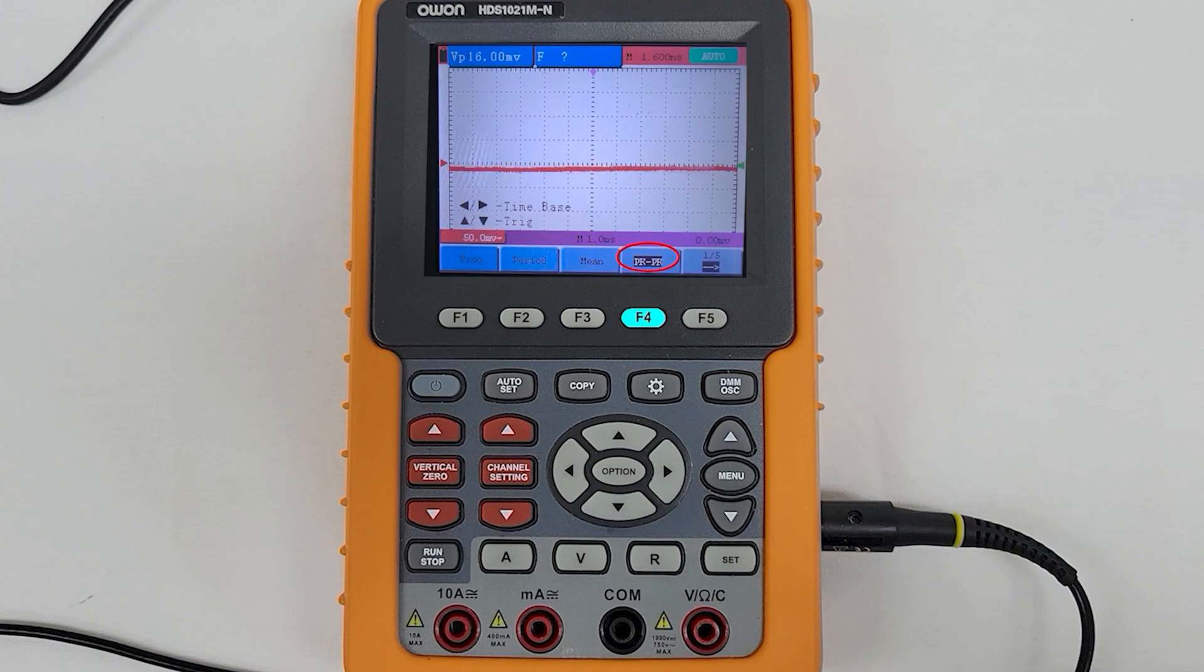Press the F4 button to choose PKPK, peak to peak. Press the menu button, then scroll until ACQU mode is selected. Press the F2 button until it is set to peak detect.